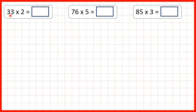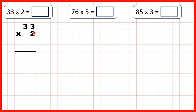We need to multiply a two-digit number by a single-digit number using expanded column multiplication. First, we have 33 times 2. We can set the question out like this, with our two-digit number on top and our single-digit number below.